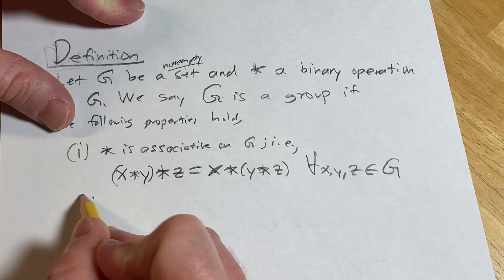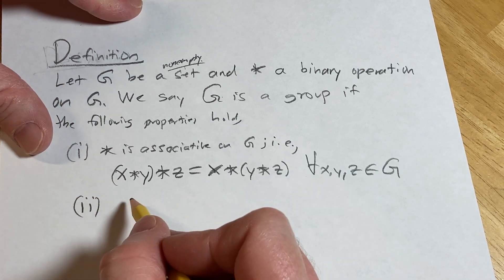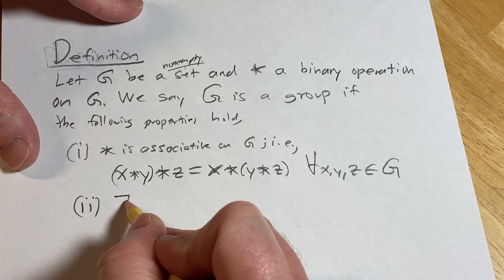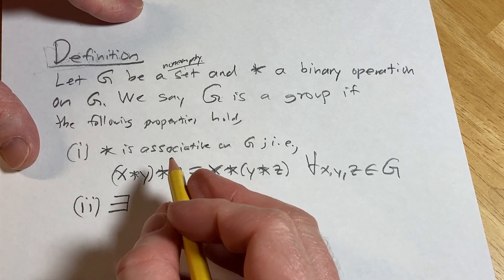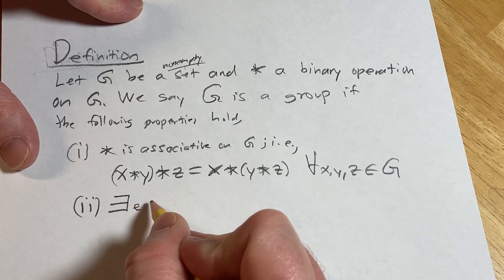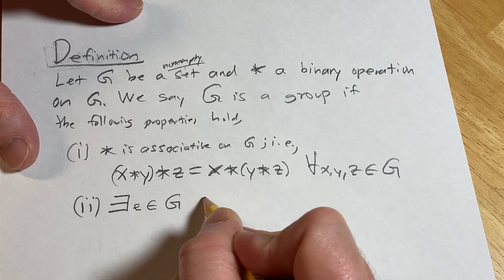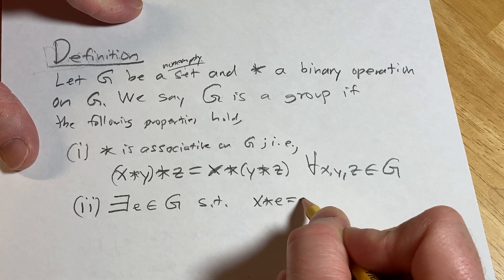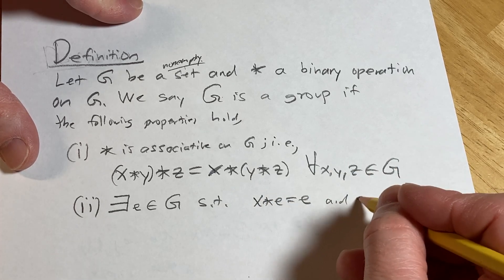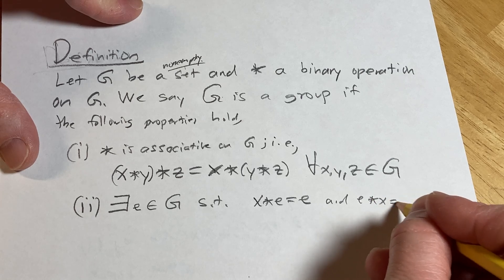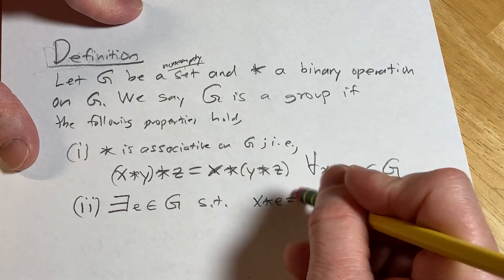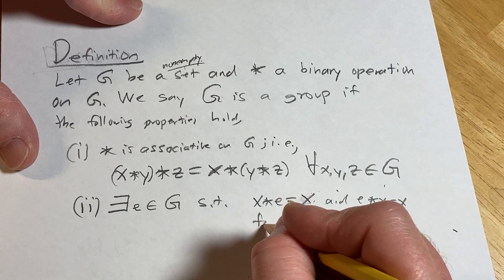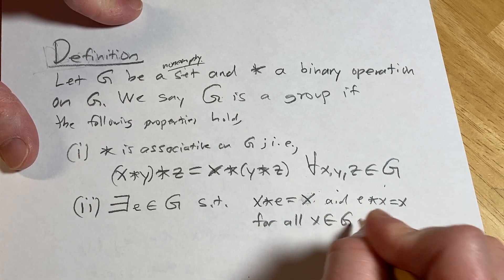Two. The other thing we're going to have is this identity element. There exists an element e in G such that x star e equals x and e star x equals x. And this is for all x in G. Very important.